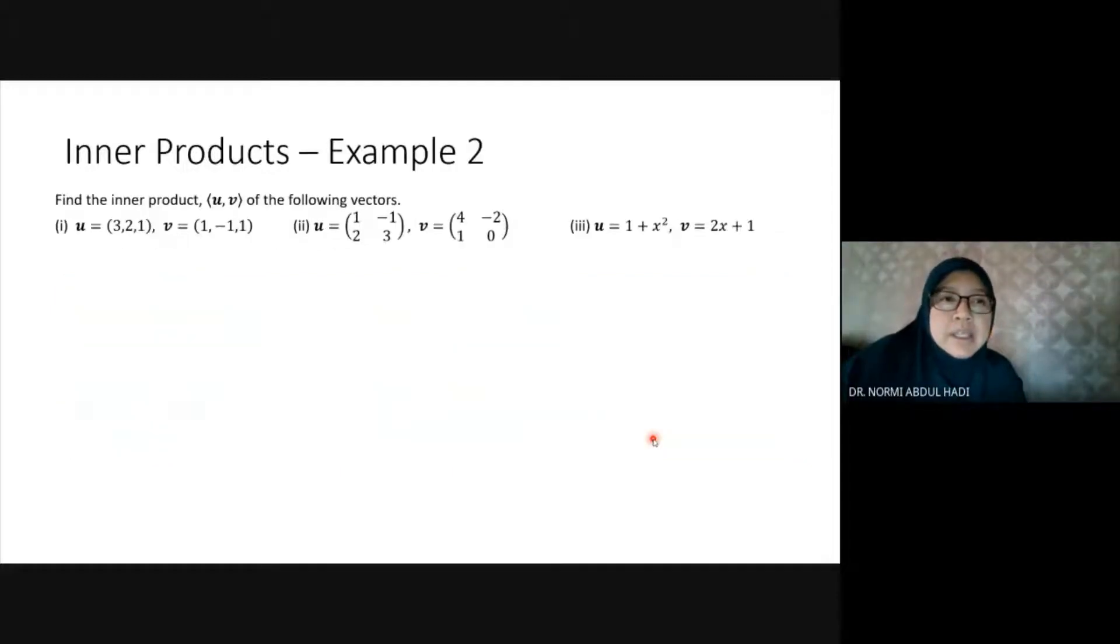How to find the inner product uv? The first one is Rn - dot product: 2×(-1) + 1×1. Number two: 1×4 + (-1)×(-2) + 2×1 + 3×0.